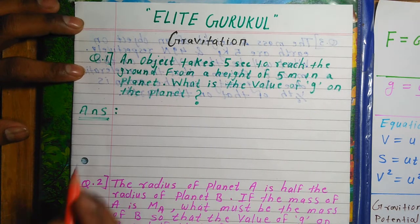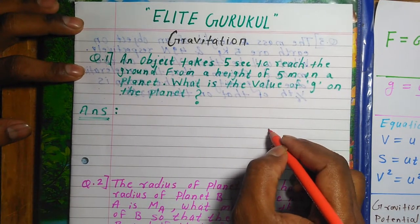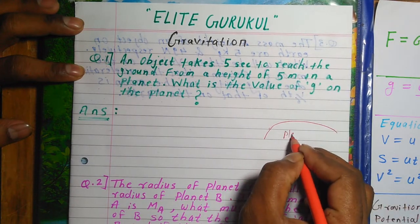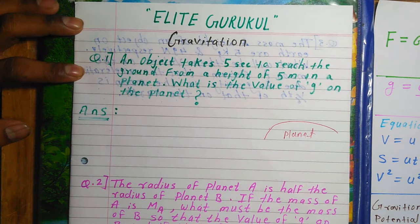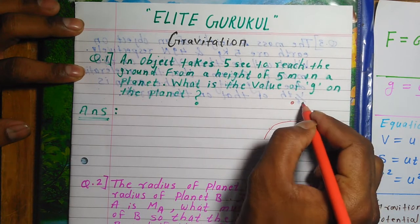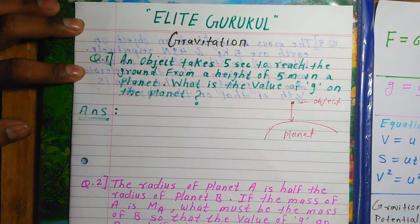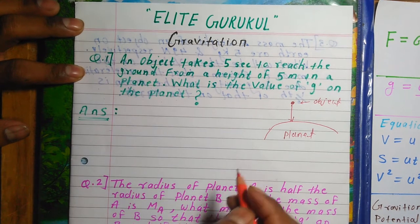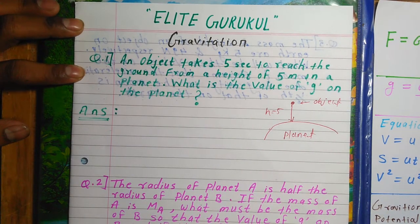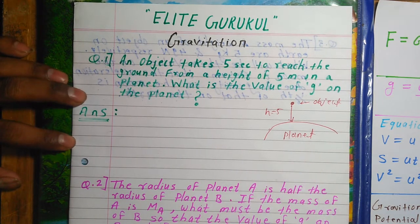Question number 1: An object takes 5 seconds to reach the ground from a height of 5 meters on a planet. What is the value of small g on that planet? Small g means acceleration due to gravity. Let's consider a planet. One object takes 5 seconds to reach the ground from a height of 5 meters. So, time given is 5 seconds, height (displacement) is 5 meters, initial velocity is zero because the object starts from rest, and we need to find g.